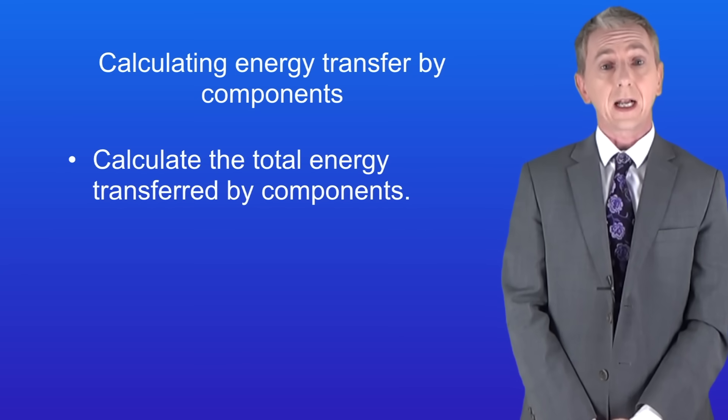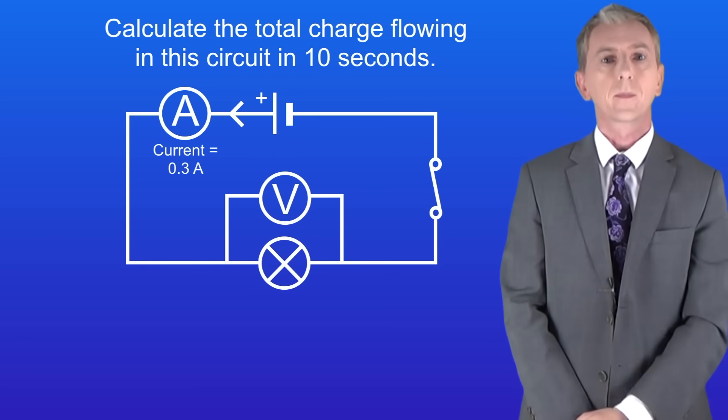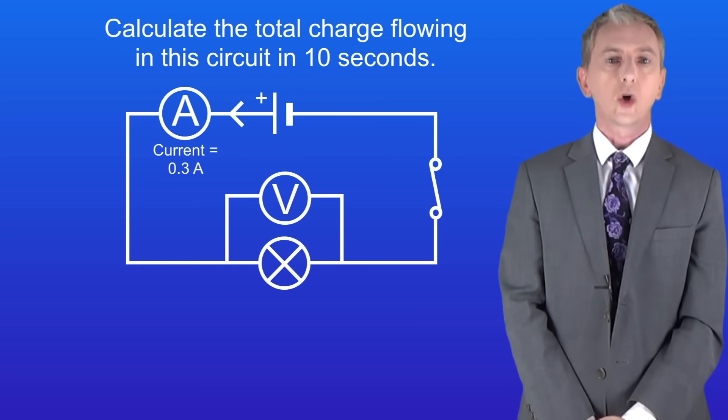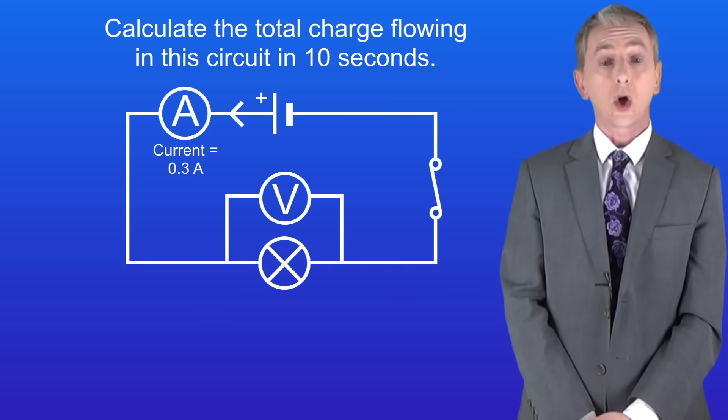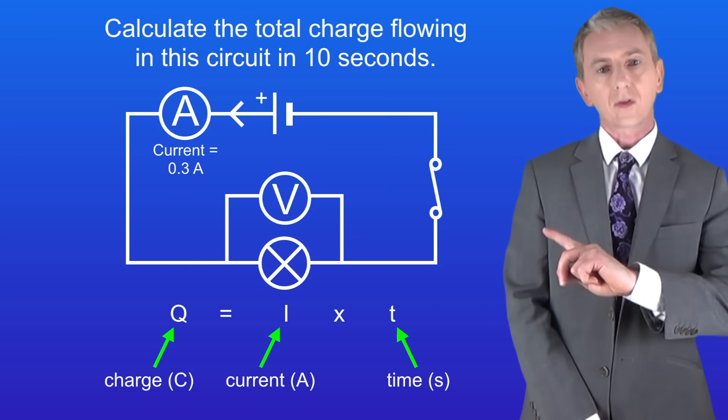In the last video we saw how to calculate the total charge flowing in a circuit such as this one. This circuit has a current of 0.3 amperes and we're asked to calculate the total charge flowing in 10 seconds. Now to do that we use this equation.